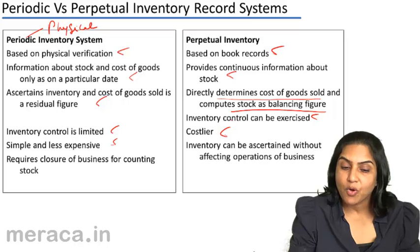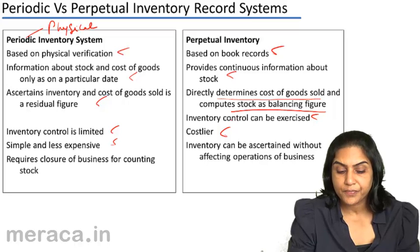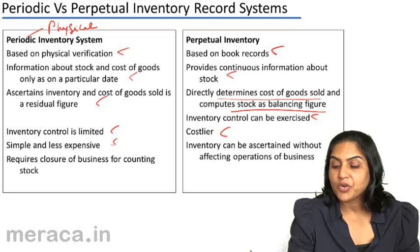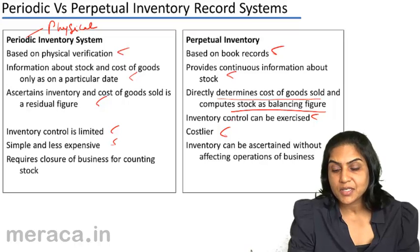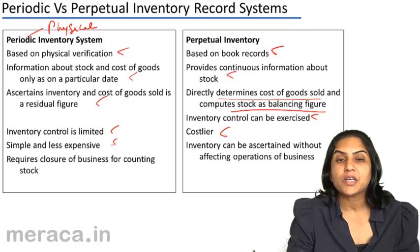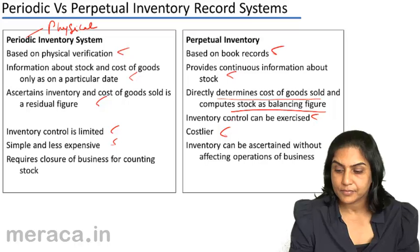In order to count stock under the periodic inventory system, the business has to be closed down. However, in the case of the perpetual inventory system, inventory can be ascertained without affecting the operations of a business, since the amount of inventory can be directly checked from the store's ledger.